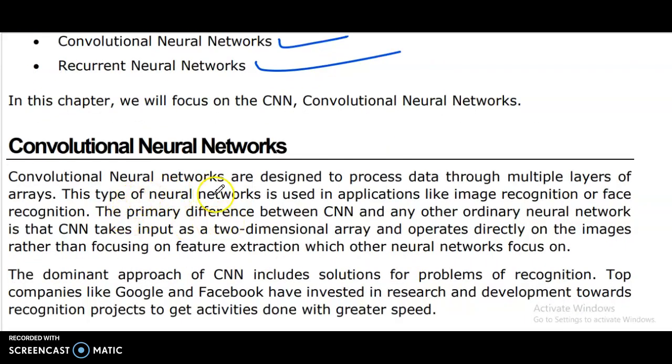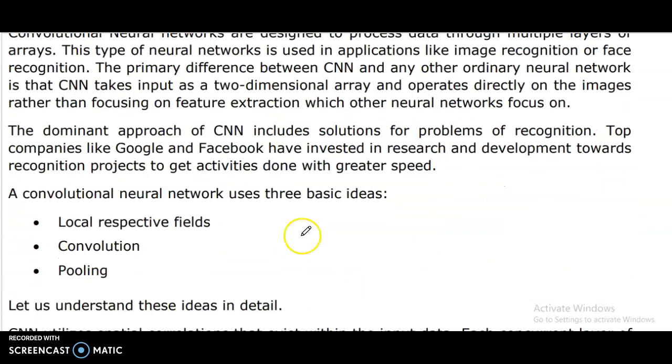Convolutional Neural Networks. Convolutional neural networks are designed to process data through multiple layers of arrays. This type of neural network is used in applications like image recognition or face recognition. The primary difference between CNN and any other network is that CNN takes inputs as two-dimensional arrays and operates directly on the images rather than focusing on feature extraction.